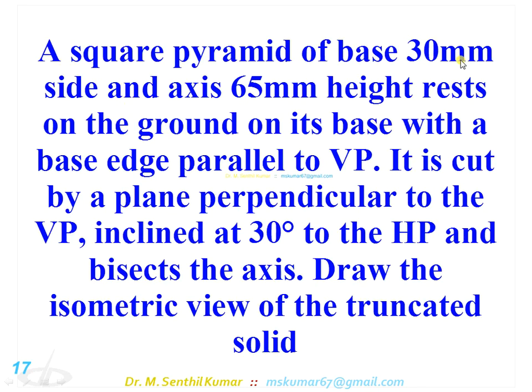A square pyramid of base 30mm side and axis 65mm height rests on the ground on its base, with a base edge parallel to VP. It is cut by a plane perpendicular to the VP, inclined at 30 degrees to HP and bisects the axis. Draw the isometric view of the truncated solid.